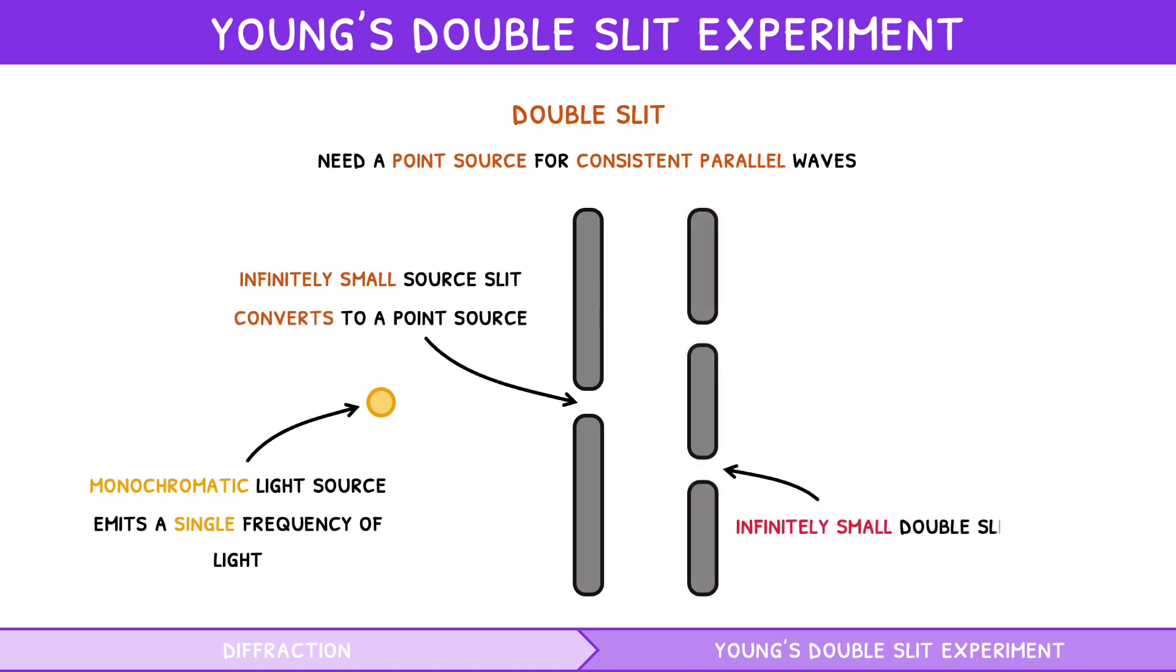Infinitely small double slits. Like in single slit diffraction, each acts as a new point source to produce a wave. And a projection screen, the surface where the resulting intensity pattern is shown.